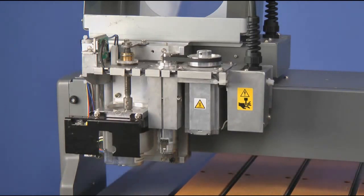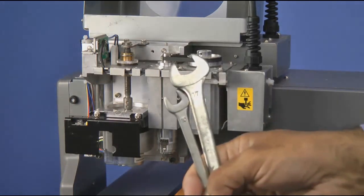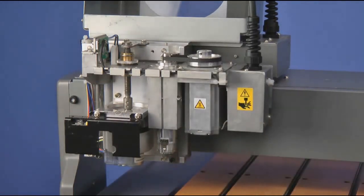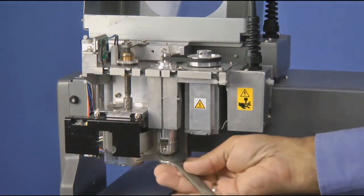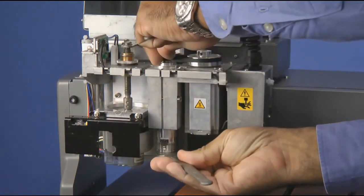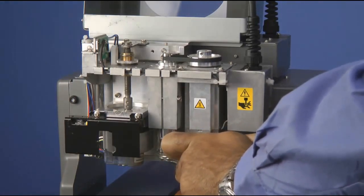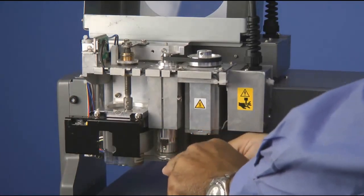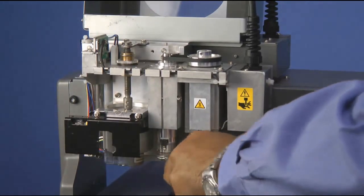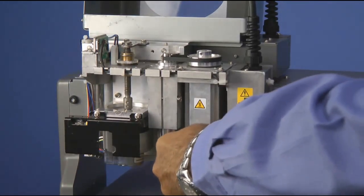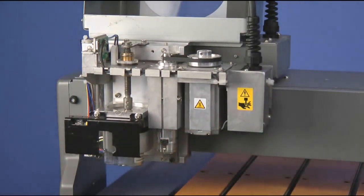And once you have hand-tightened it, you want to use the supplied spanner wrenches to go ahead and secure the collet in place. You want to go ahead and place your 17mm tool on first and then take your 10mm and you are going to pull opposite of each other to tighten them down.